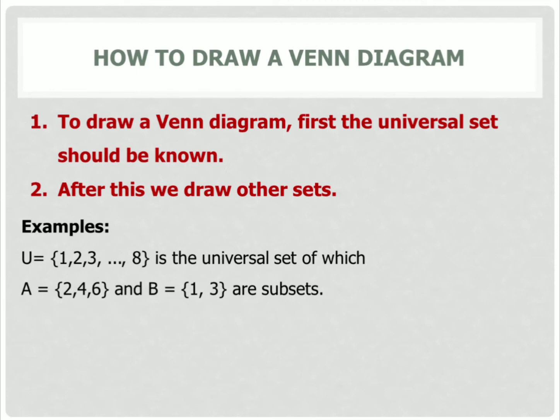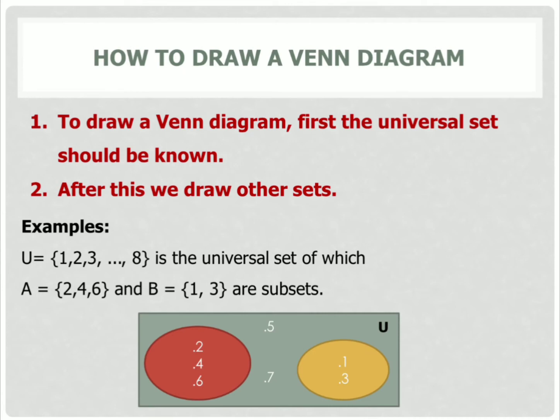A equals to {2, 4, 6} and B equals to {1, 3}. Then of course, the universal set is represented by a rectangle and A and B are represented by circles. So {2, 4, 6} is set A and {1, 3} is set B. The numbers 5 and 7 are the other elements which are also in the universal set.